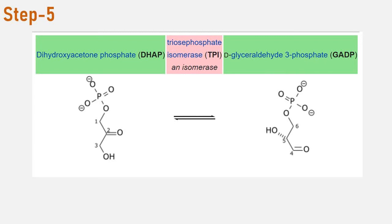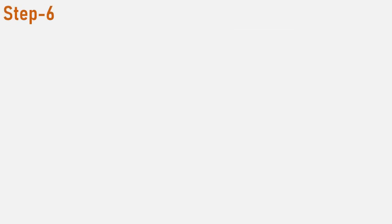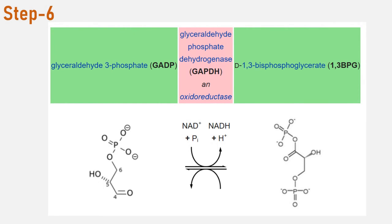Therefore, by the end of this preparatory, or chemical priming, or energy-consuming phase, one glucose molecule is broken down into two glyceraldehyde-3-phosphate molecules. The second phase of glycolysis — the payoff or energy-yielding phase — creates the energy that is the product of glycolysis.